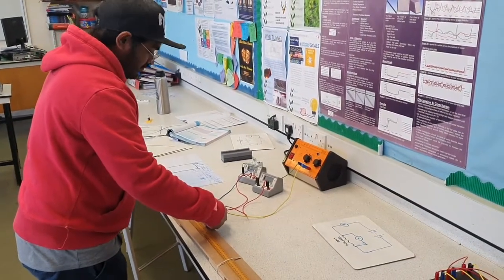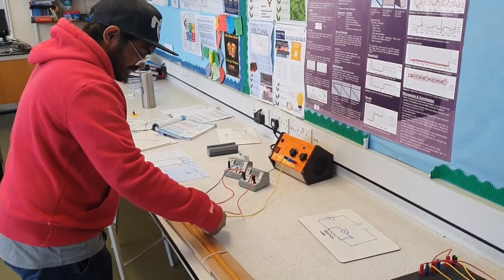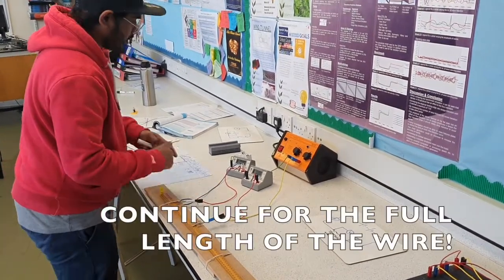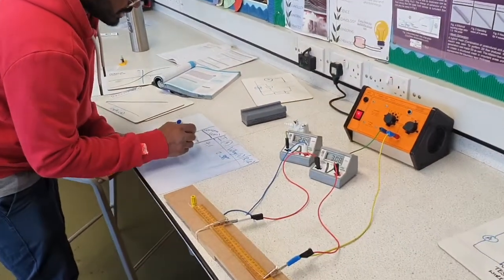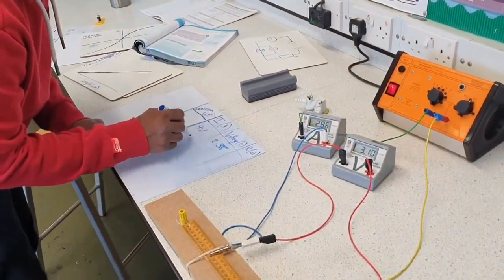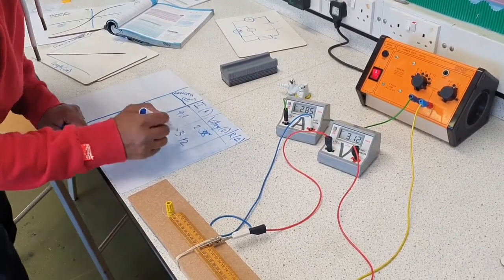Let's go on now. We're going to do from 10 centimeters, now we're going to go to 20 centimeters. So again switch on the power pack, we're going to get current as 2.86 and then voltage as 3.12.